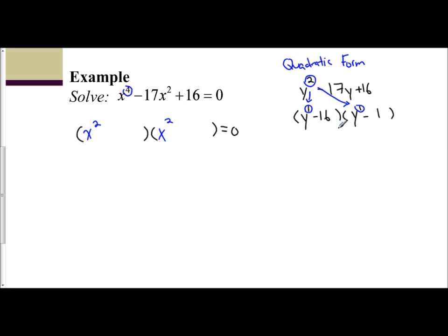And the rest of the numbers are just the same. You follow the regular factoring technique. They multiply to give you 16, add to give you negative 17. And that's negative 16 and negative 1. And now we finish factoring.